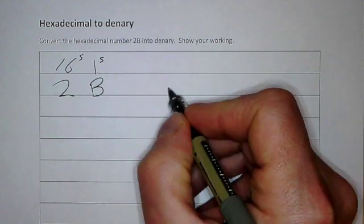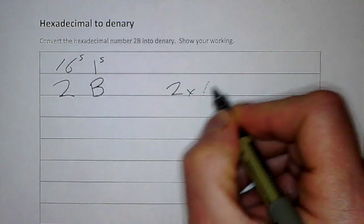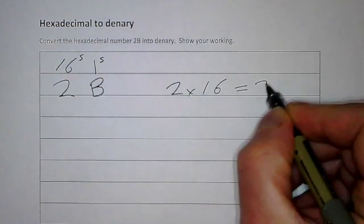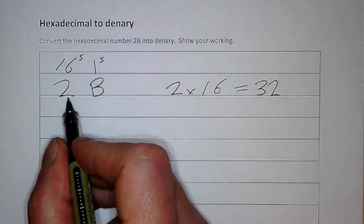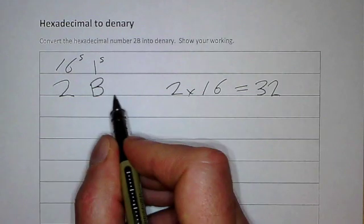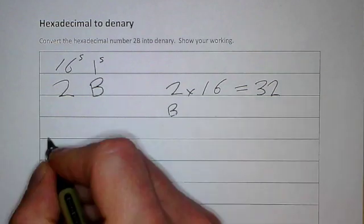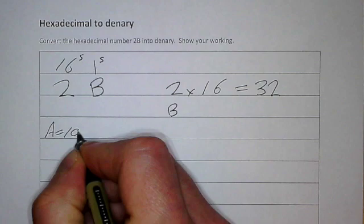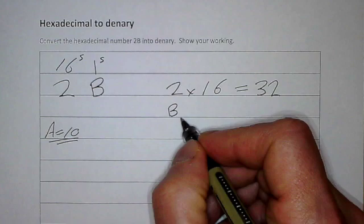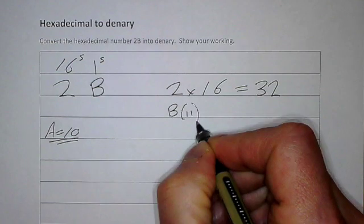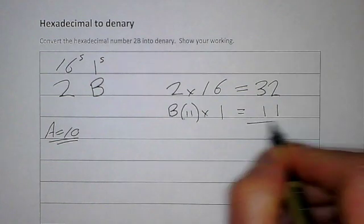The mathematics works out as 2 multiplied by 16 equals 32, so that's that column taken care of. Now we're going to look at the B. Remember that A is always 10 — that's the only number you have to remember in hex. So B is 11, and 11 times 1 is 11.